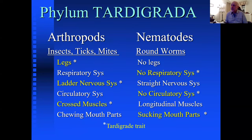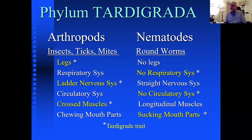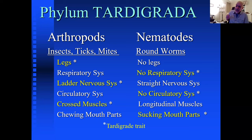Looking in more detail, tardigrades share features with both arthropods and nematodes. Like insects, ticks, and mites, they have a similar number of legs as spiders, a ladder-like nervous system, crossed muscles, and chewing-style mouthparts — though they don't chew, they suck. In the next slide you'll see how they puncture their prey and suck out the juices.